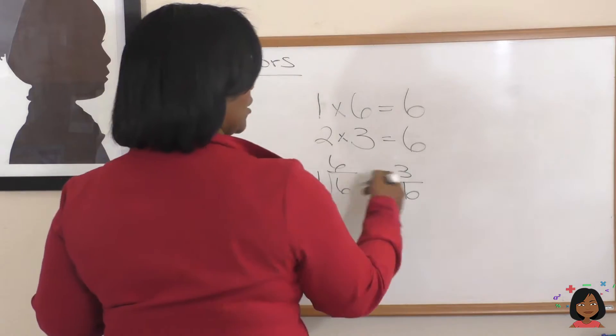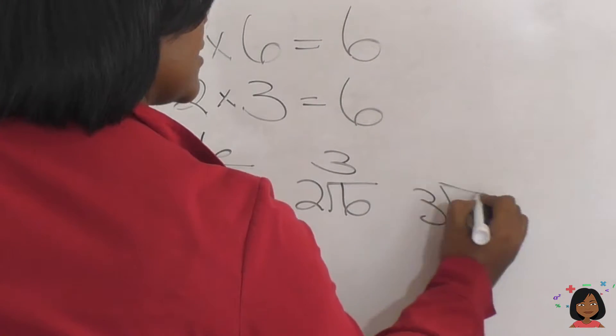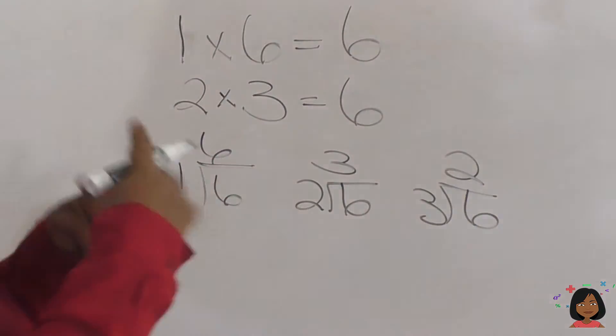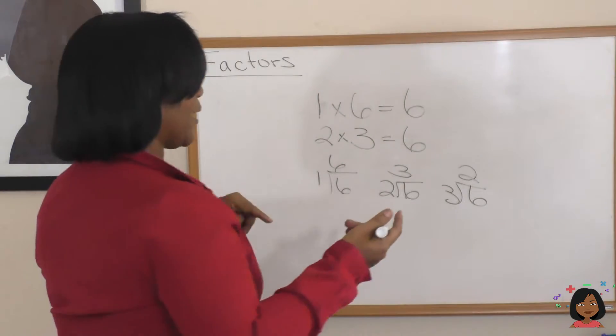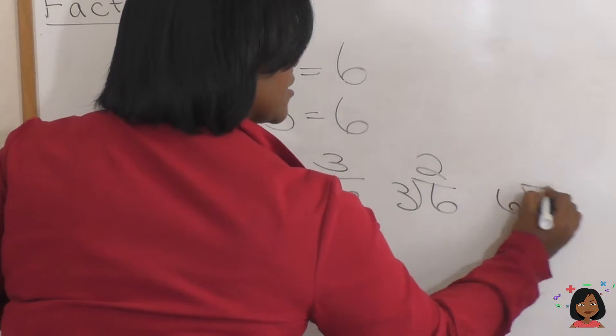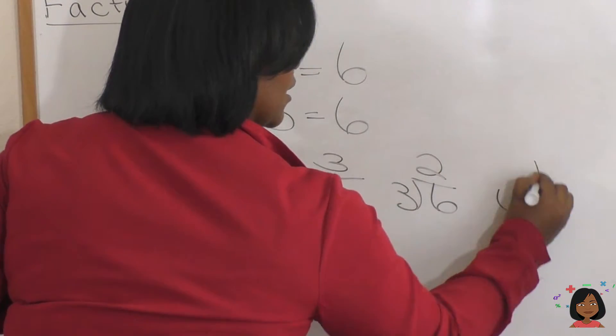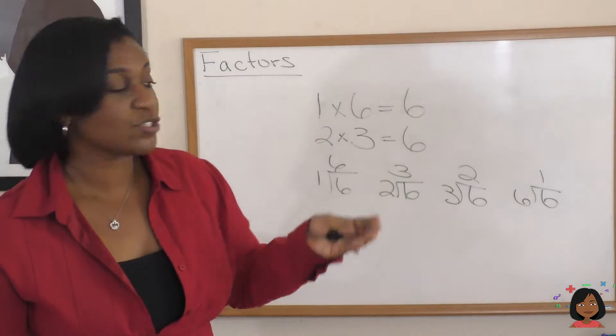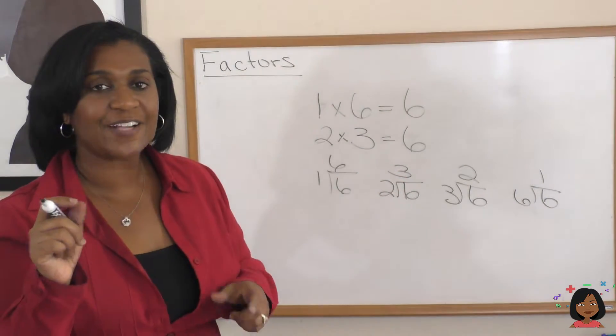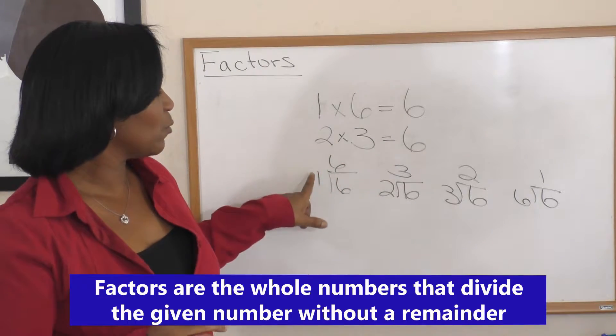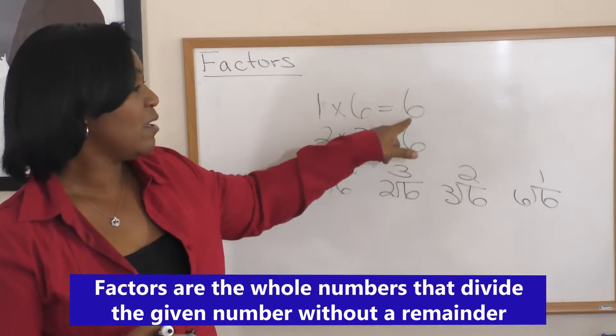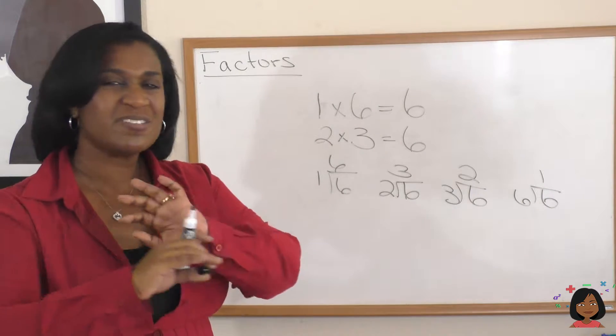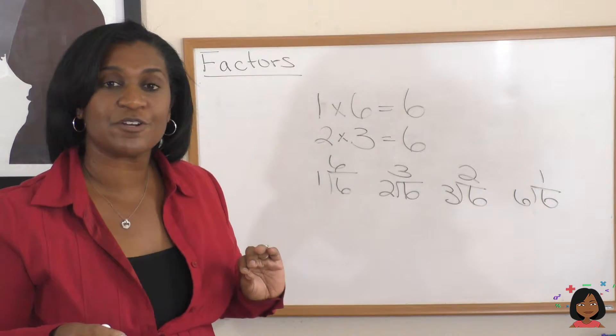What about the number 3? 3 into 6 is 2. It goes in evenly. No remainder. And what about our 6? 6 into 6 is 1. Again, no remainder. So we can say that factors are numbers that when you divide it into that number or product, it divides evenly. There's nothing left over. No remainders.